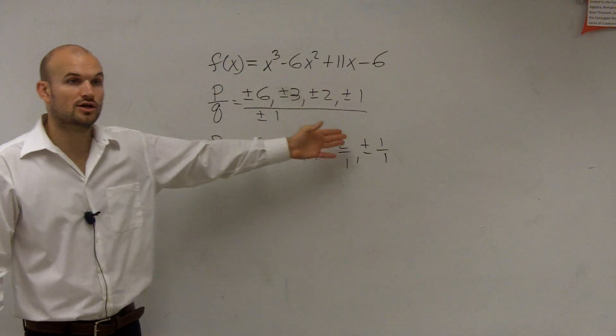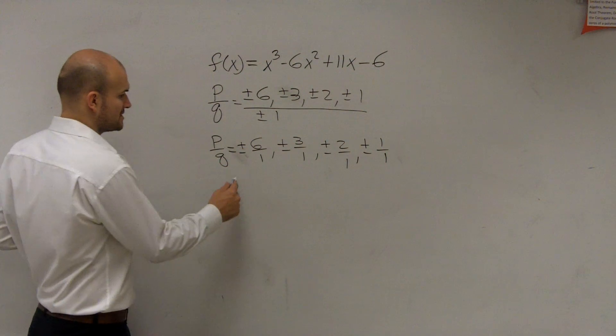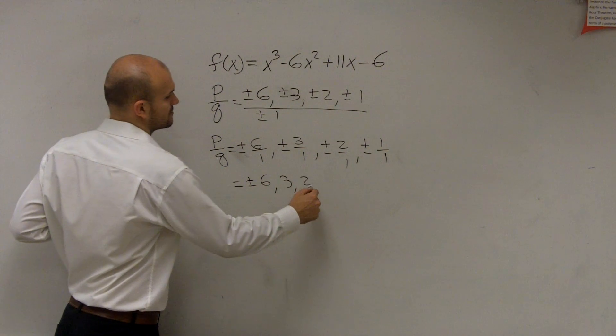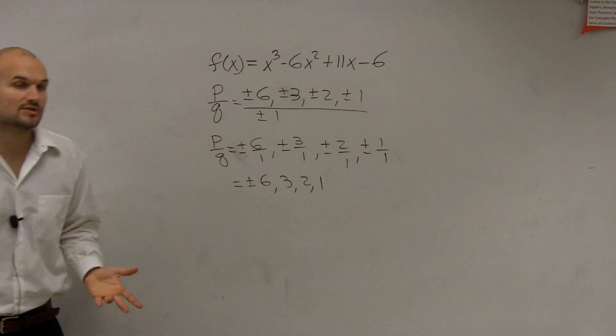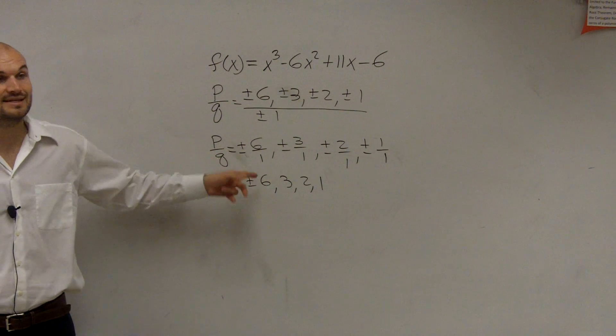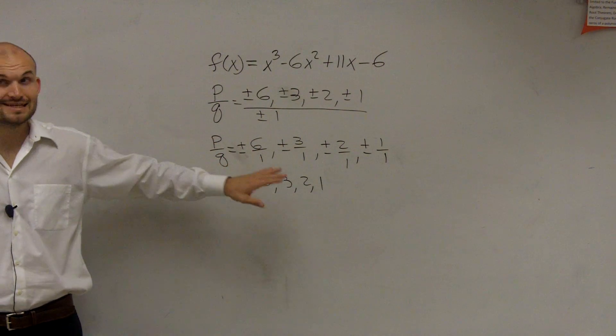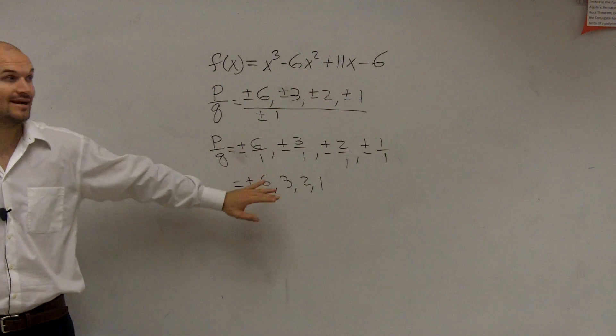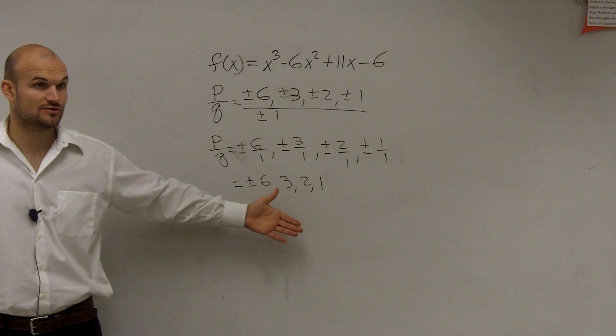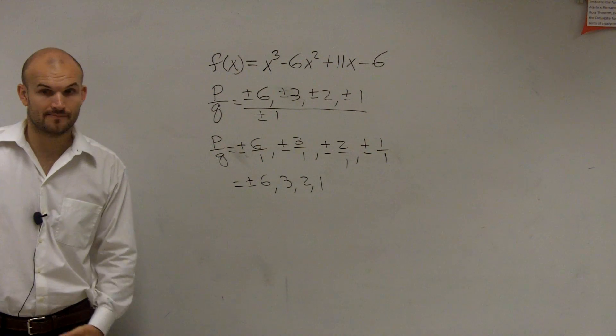Well, you guys can see these are all going to be unique, and really what we have is our zeros are all going to be plus or minus 6, 3, 2, and 1. So that means if we have a rational zero, it's going to be one of these. This test does not guarantee that one of these is a zero. It just says if we have a rational zero, it's going to be one of these.